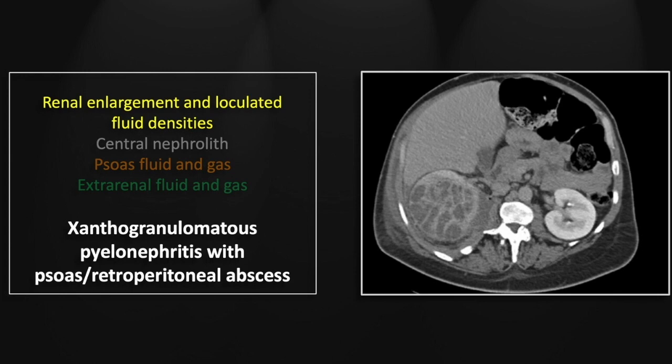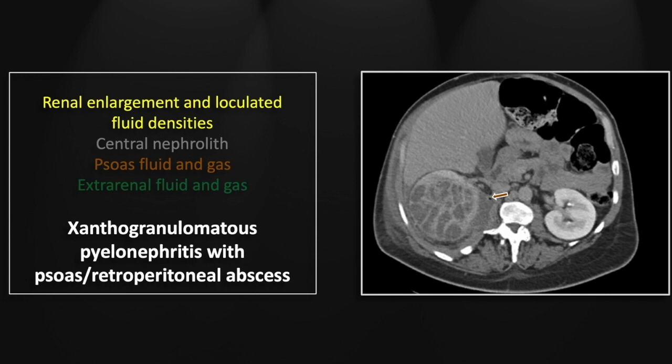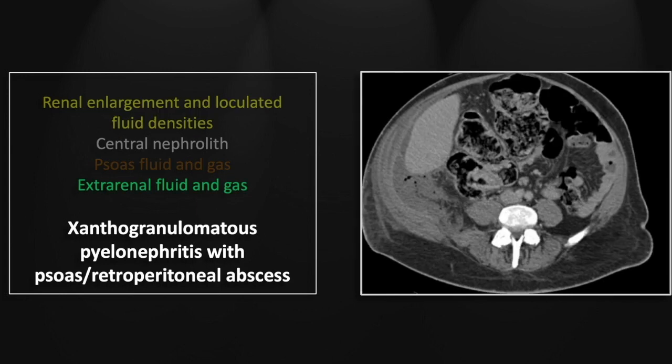Another helpful finding, beyond the renal enlargement, is this extension into the psoas. There is fluid extending from the kidney and there is a small focus of gas suggesting it has an infectious etiology. Over 50% of XGPs have extra-renal involvement, and so it is this in conjunction with the other findings that truly makes this diagnosis.